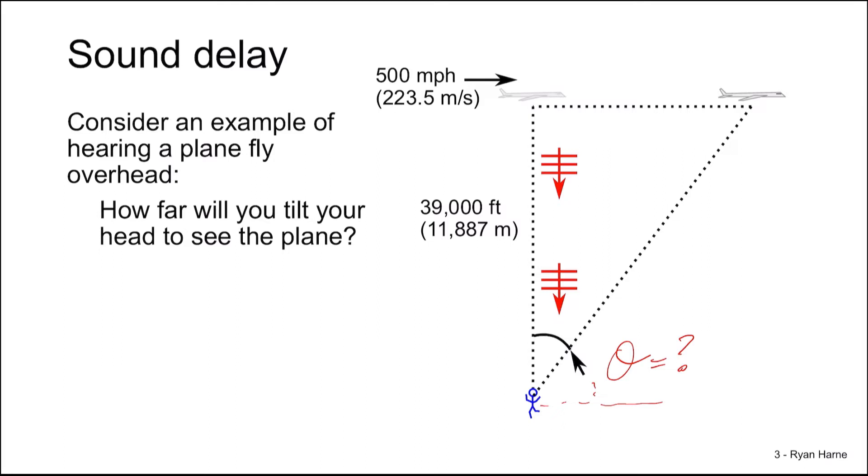The first number to evaluate is the time for sound to travel 39,000 feet. Let's use the SI units here. So we have 11,887 meters divided by 343 meters per second, neglecting the sound speed variation associated with the elevation. This is around 34.6 seconds.